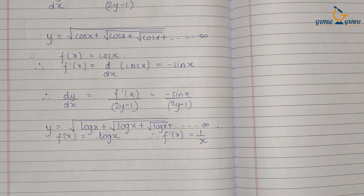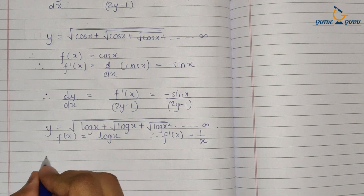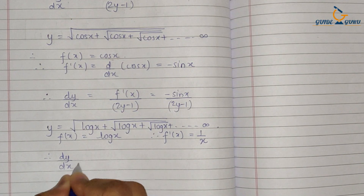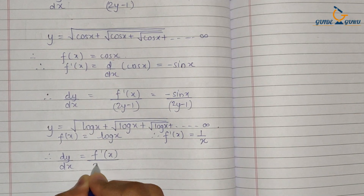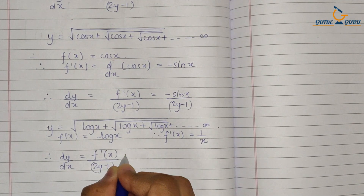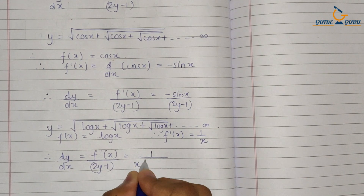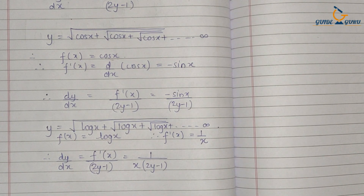According to the shortcut, the derivative dy/dx is equal to f'(x) upon (2y minus 1), so this will be 1 upon x into (2y minus 1). This is so simple when you have this kind of function.